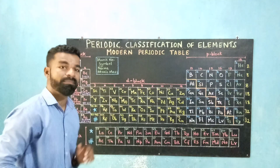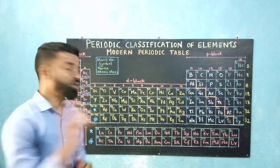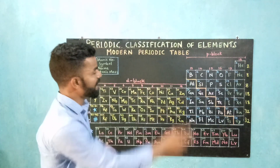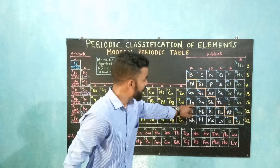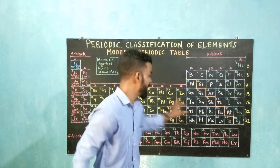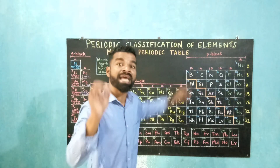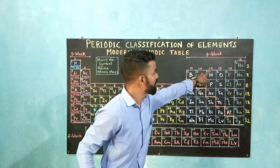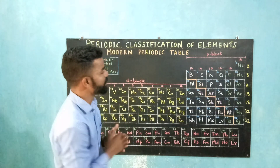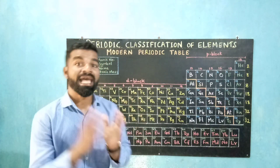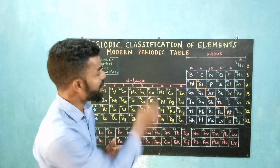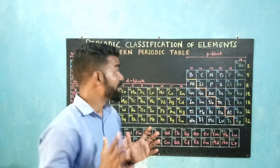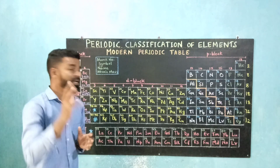The D block is formed by transition metals — a set of metallic elements which occupies the central block in the periodic table. The P block is formed by a group of noble gases, non-metals, metalloids, and post-transition metals. Group 13 is known as the boron family, group 14 is the carbon family, group 15 is the nitrogen family, group 16 is the oxygen family, group 17 is the halogen family, and group 18 is also known as zero group, occupied by noble gases which are also called inert gases.